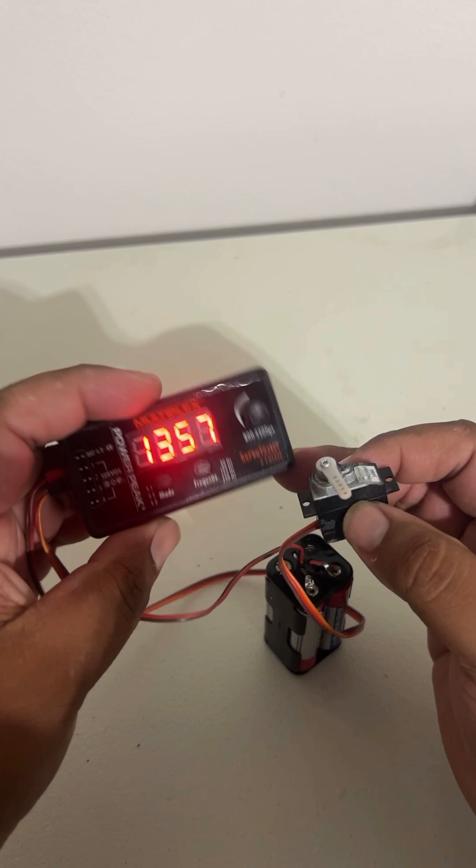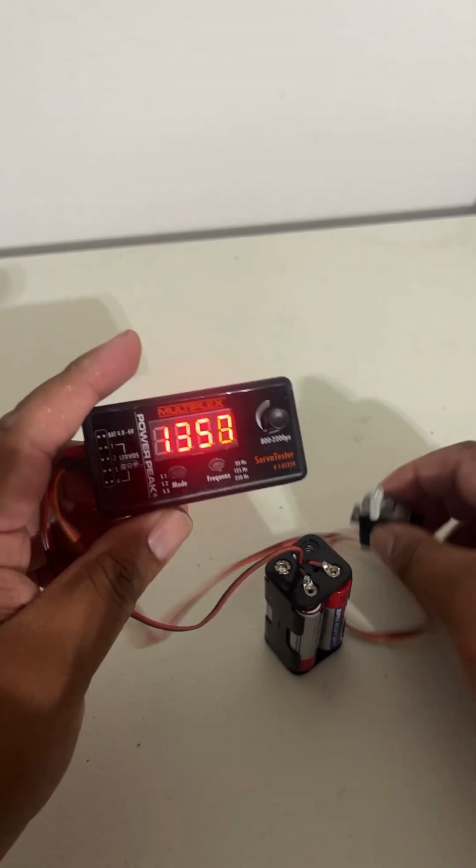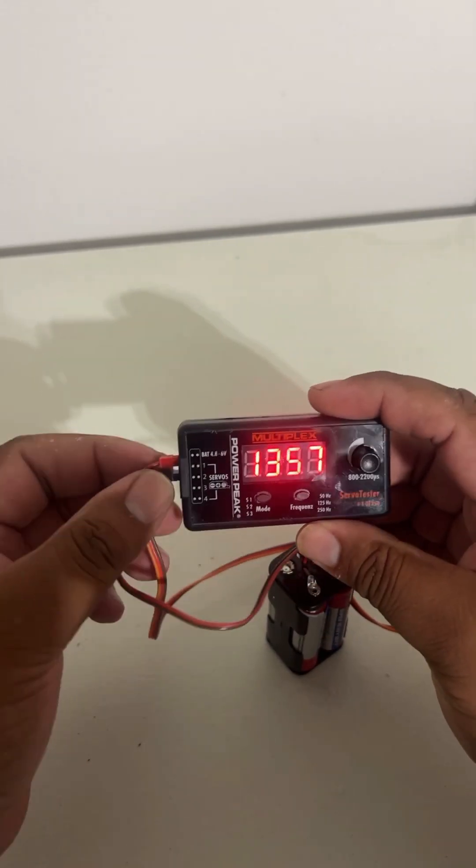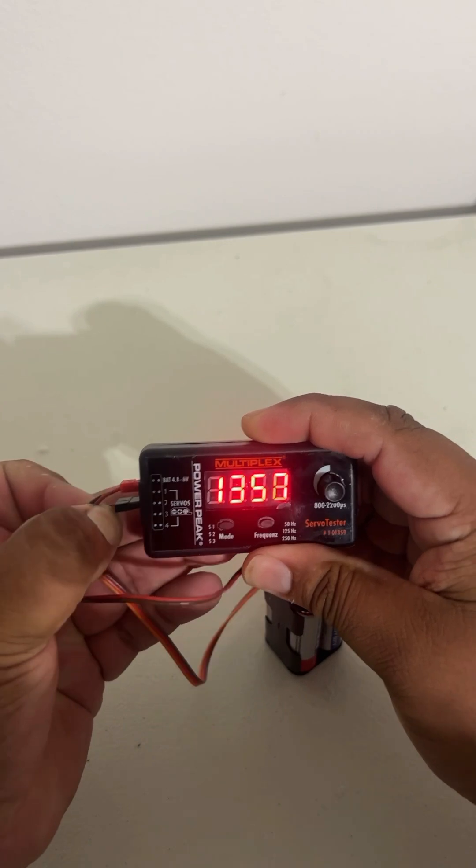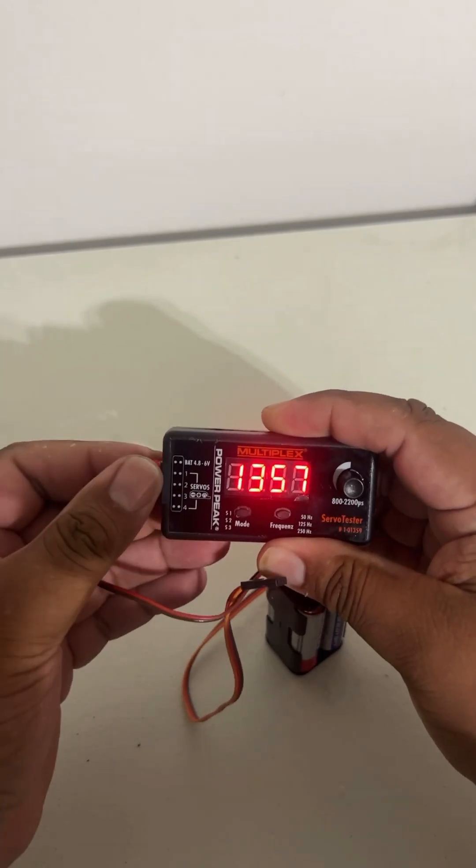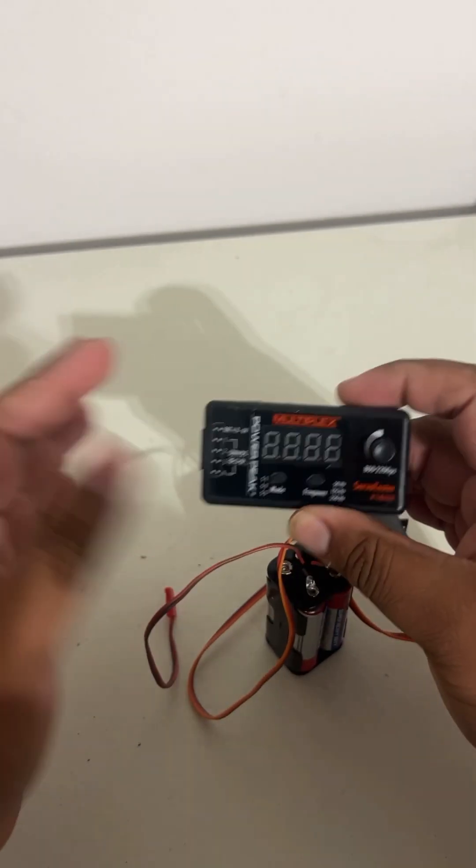And that's how you use a servo tester. To turn it off, all you do is unplug your servo, same reverse order. So unplug the servo and unplug the servo tester, and that's it.